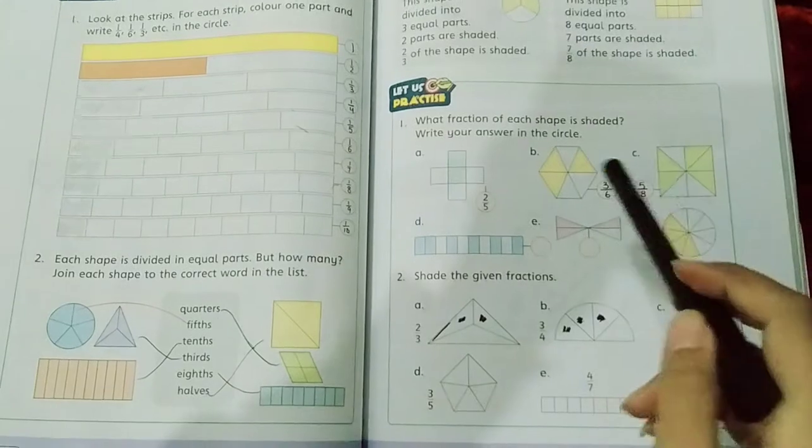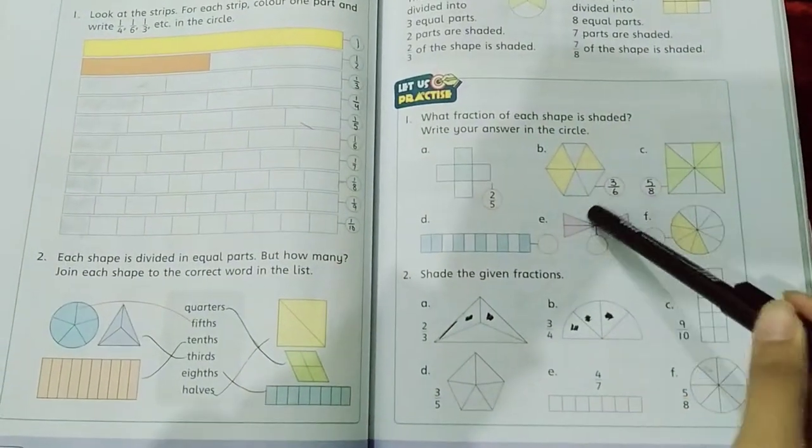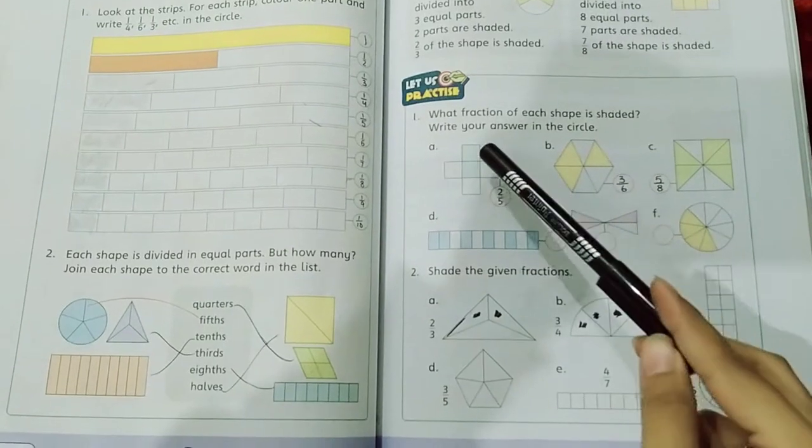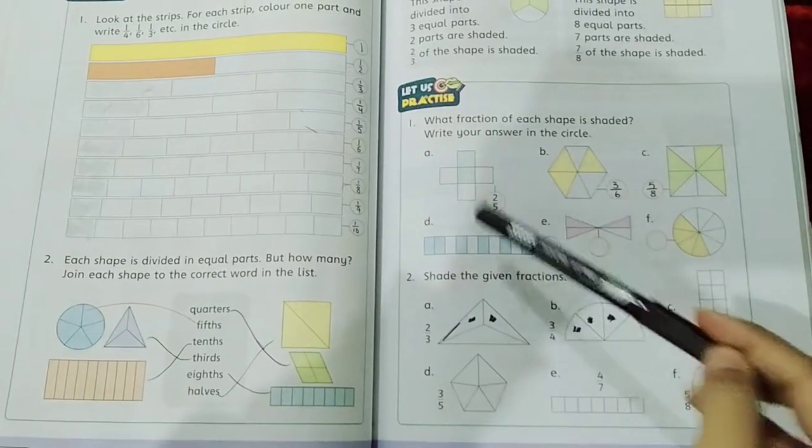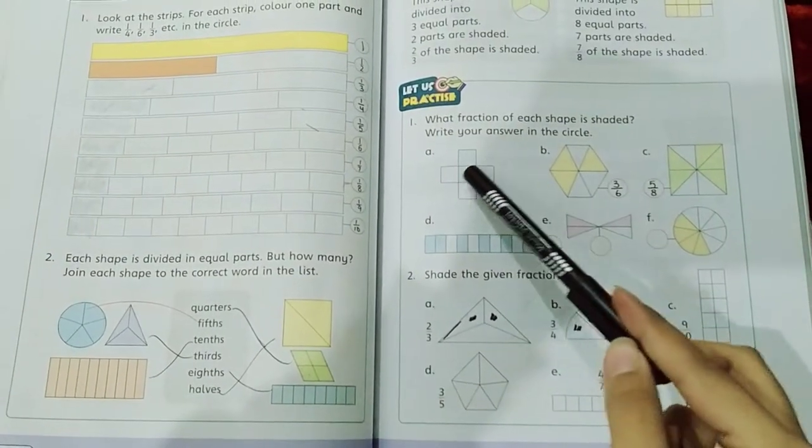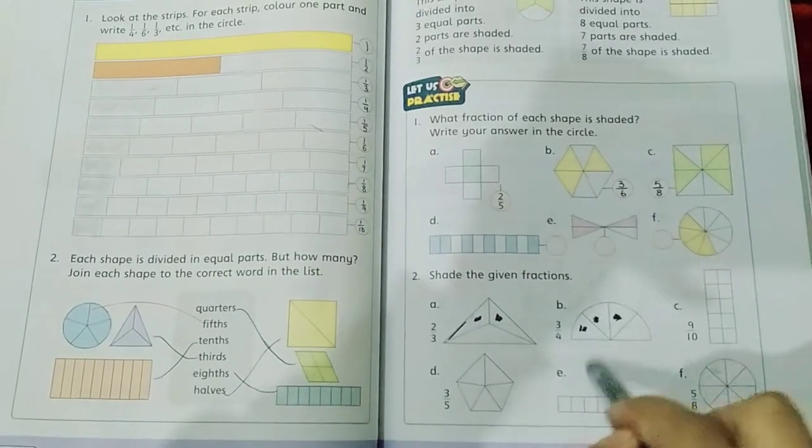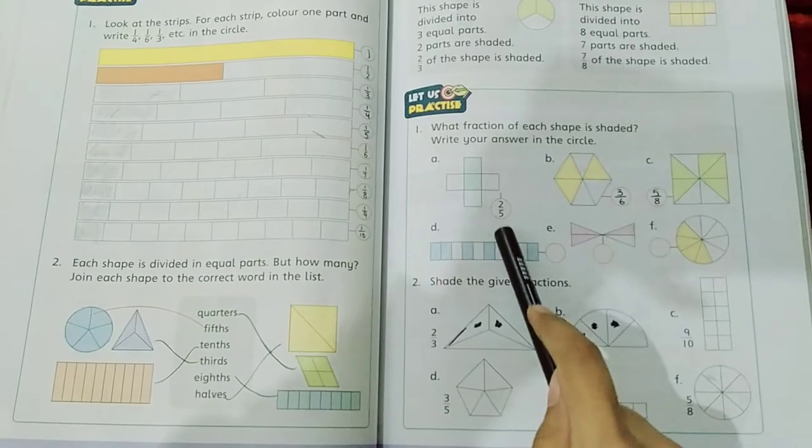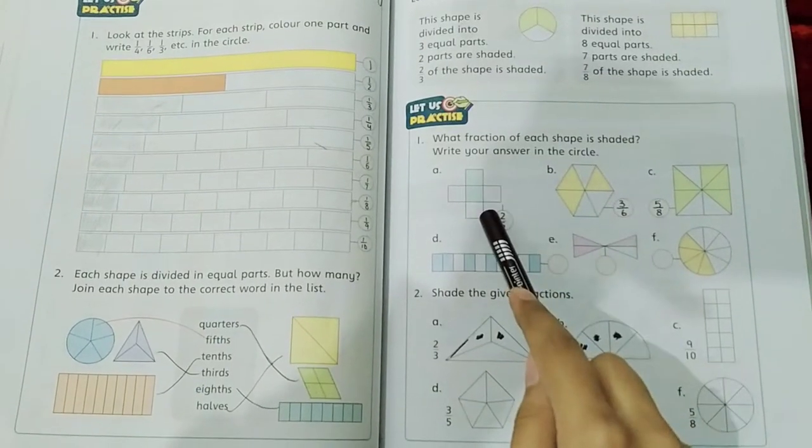And the answer is in circle. Here we have the same thing, we have here a part. Here we have box 1, 2, 3, 4, 5 total parts. We have to write down 5 and shaded it is 2.